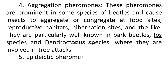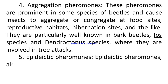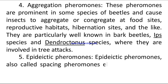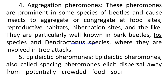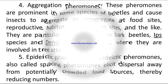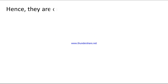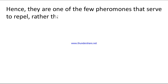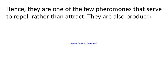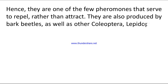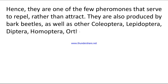Number five: epidectic pheromones, also called spacing pheromones. These elicit dispersal away from potentially crowded food sources, thereby reducing numbers. Hence, they are one of the few pheromones that serve to repel rather than attract. They are also produced by bark beetles as well as other Coleoptera, Lepidoptera, Diptera, Homoptera, Orthoptera, and Hymenoptera.